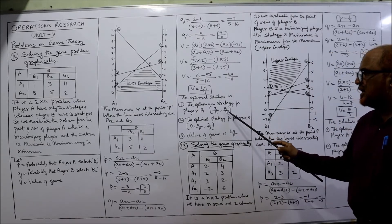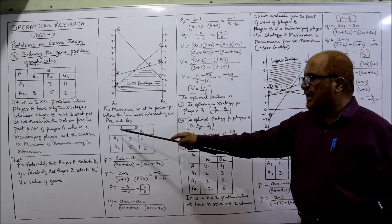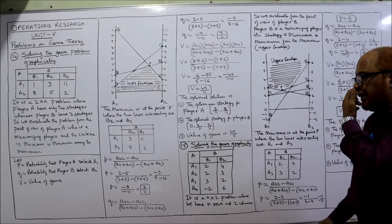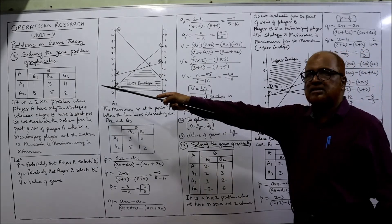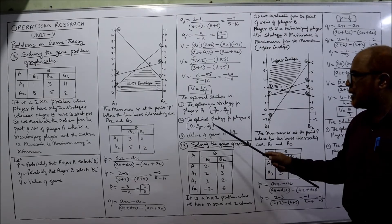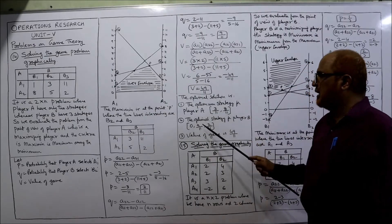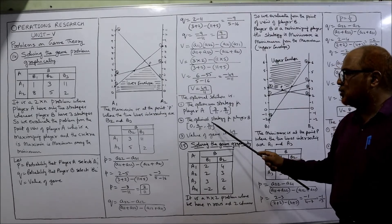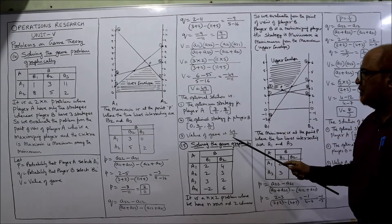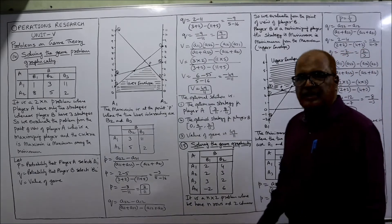The optimal strategy for player A: probability of selecting A1 is 3/11, and A2 is 8/11. For player B: three strategies were there — B1, B2, B3 — but B1 was eliminated, so its probability is 0. Probability of selecting B2 is q = 9/11, and B3 is 2/11. The value of the game is 49/11. That concludes problem 14.